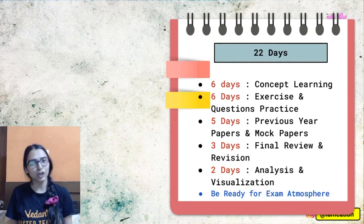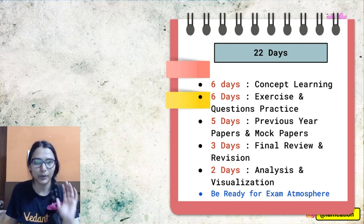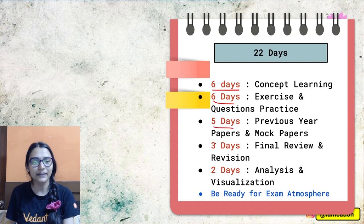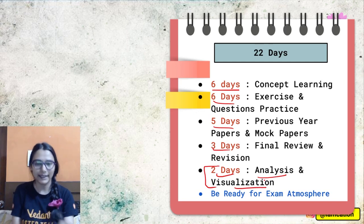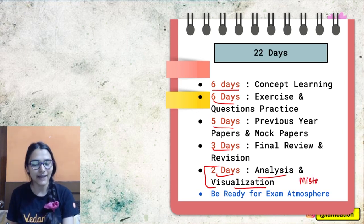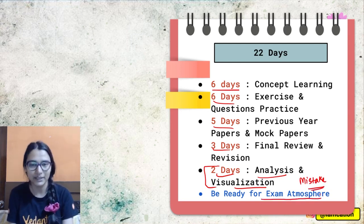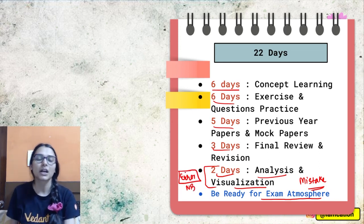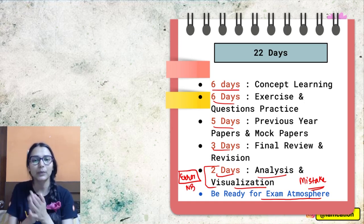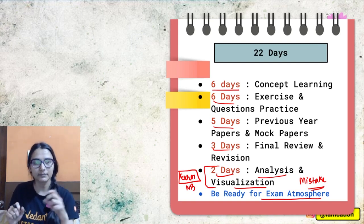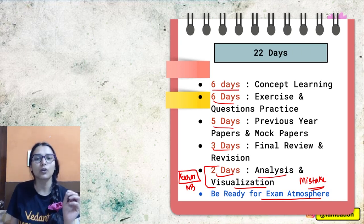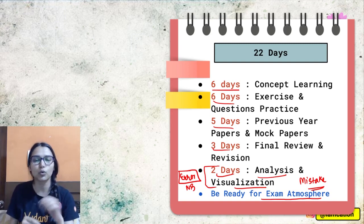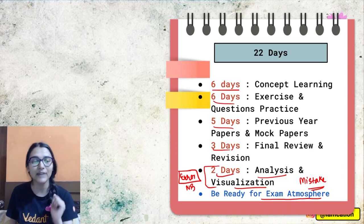If you are prepared, you have done things, we can divide 22 days in a group of six, six, five, three and two days. Two days we have kept for the analysis and the visualization. I will be analyzing my mistakes in that portion and I will make sure that in the exam, I don't make those mistakes. You can maintain an error notebook. Analyze your pre-board answer sheet and see where I am making the mistake.